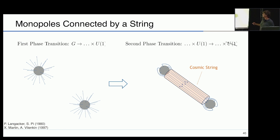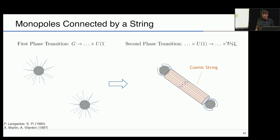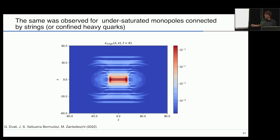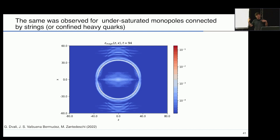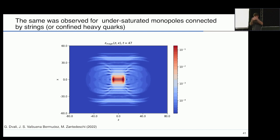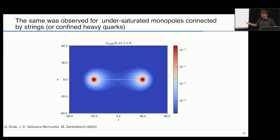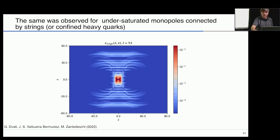Similarly, the same thing is happening with monopoles connected by string. These are important for cosmology — for gravitational waves and other applications — and also as a model for the QCD string confining heavy quarks. Again, the same phenomenon: the undersaturated monopole pair never oscillates — contrary to what people thought. If you have monopoles connected by a string they should oscillate, but they don't: they immediately dissipate the entire energy into radiation. This would not happen for saturated defects.